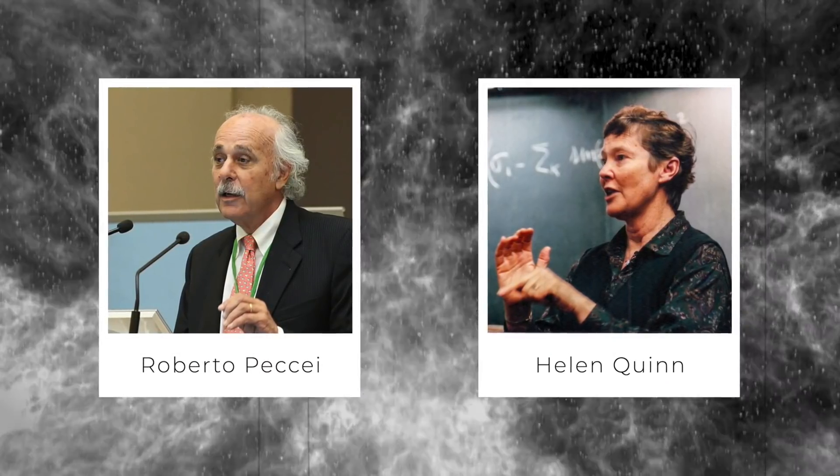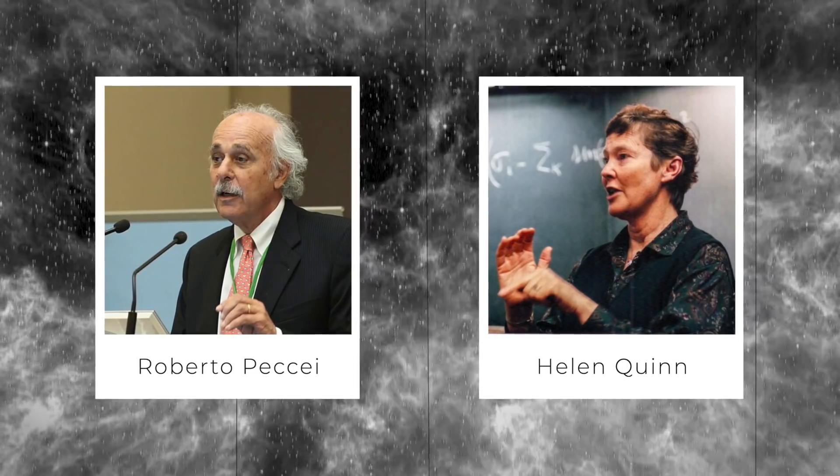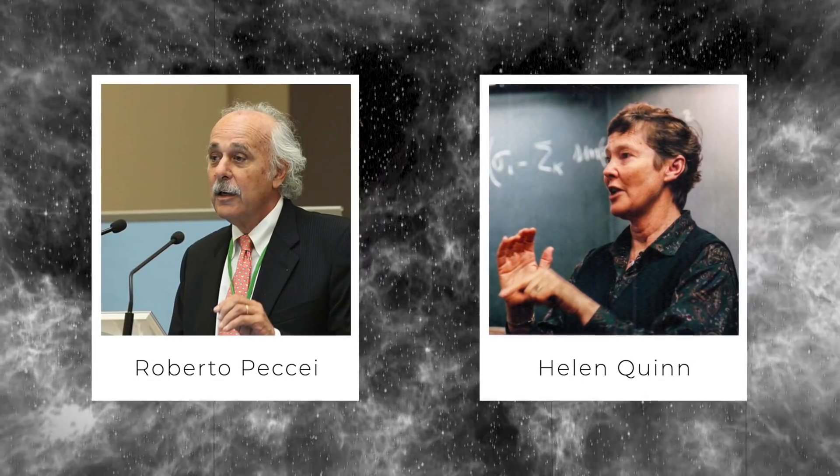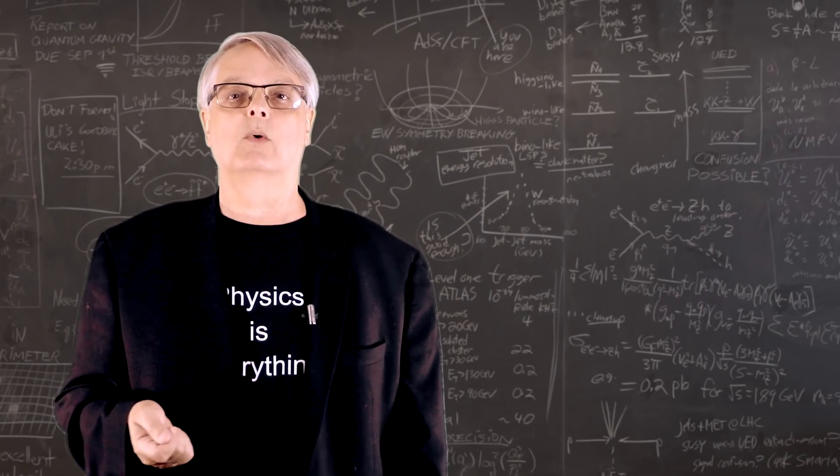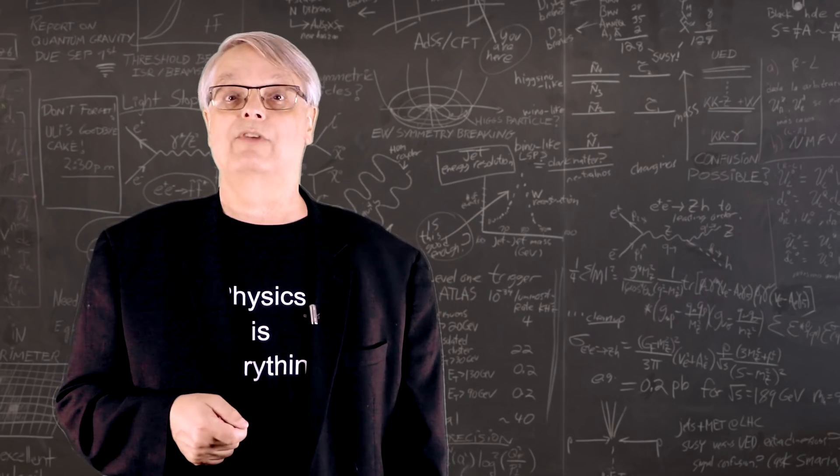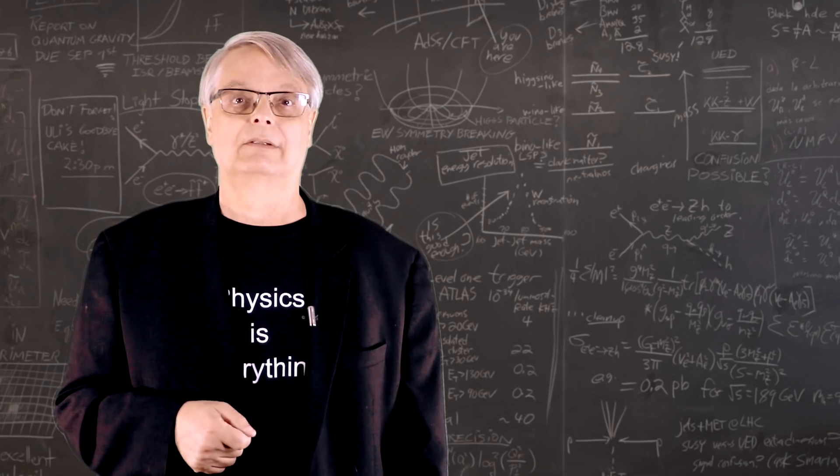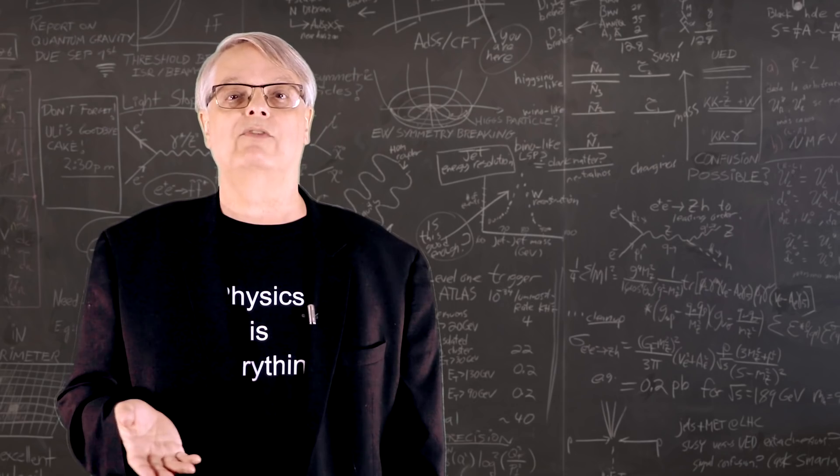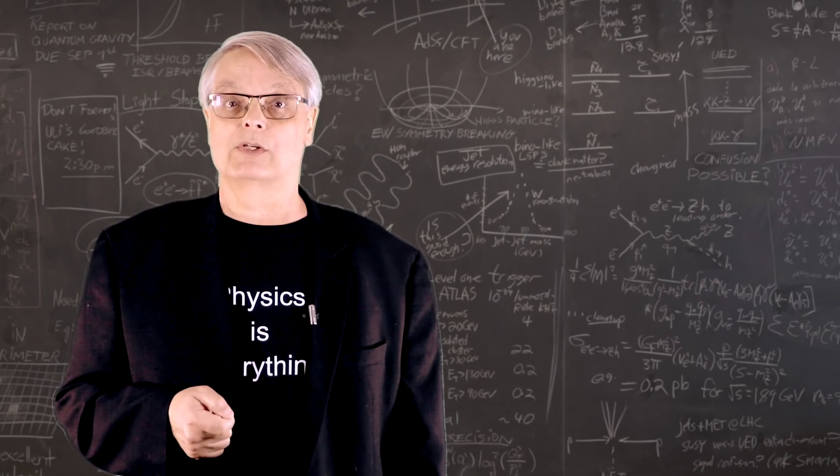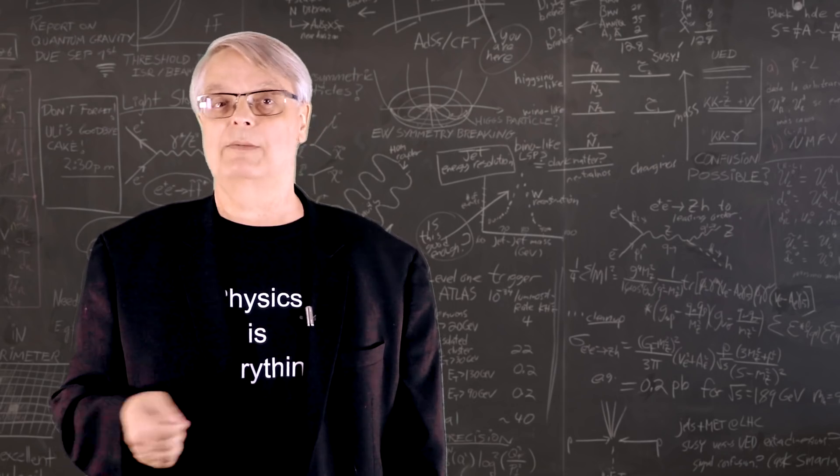In 1977, physicists Roberto Peccei and Helen Quinn were trying to solve a mystery involving the strong nuclear force. According to the theory governing the behavior of quarks and gluons, the strong force could favor either matter or antimatter, but it seems to treat both equally. Peccei and Quinn proposed a new energy field that forced the strong force to react equally with matter and antimatter.